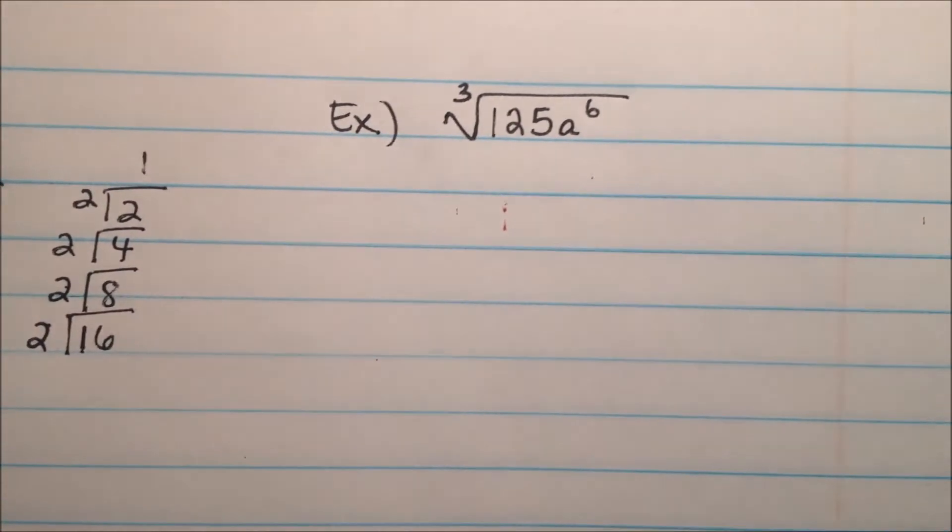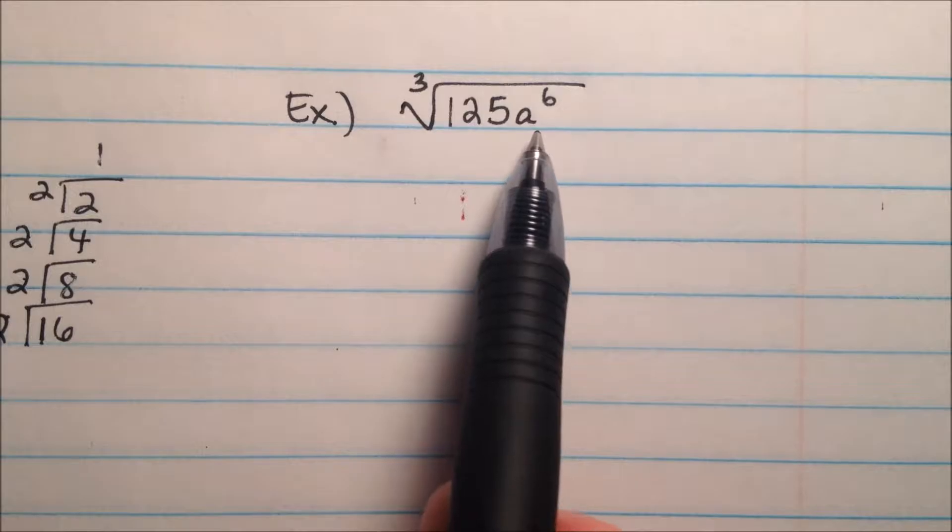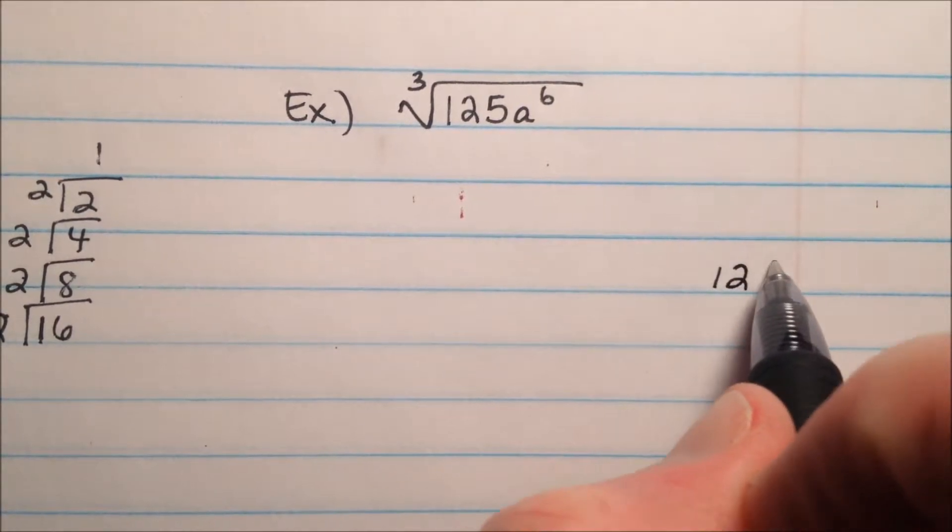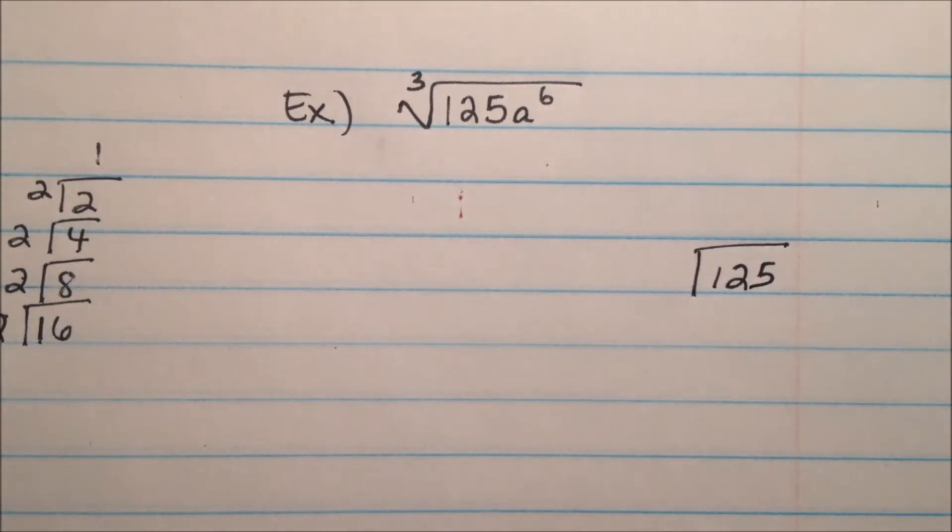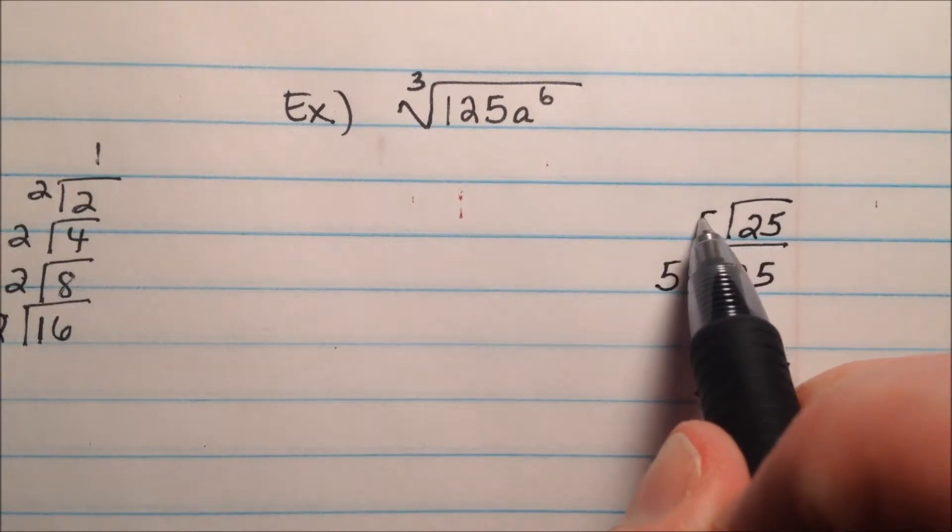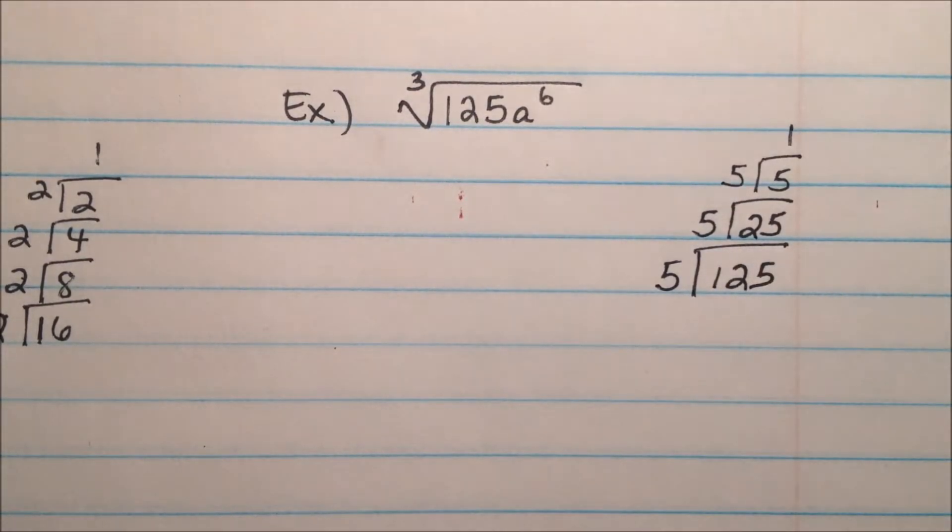So let's continue to the next example, the cubed root of 125a to the 6th. So to begin, I'm going to take 125 over here and find the prime factorization of it. So I take a 5 out, and that gives me 25. Take another 5 out, and it gives me 5. And take one final 5 out, that gives me a 1.